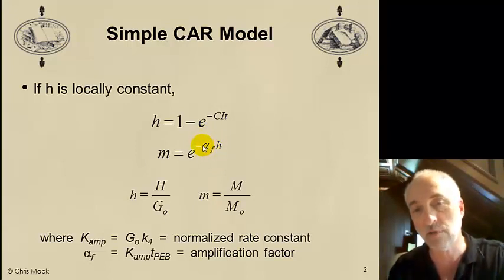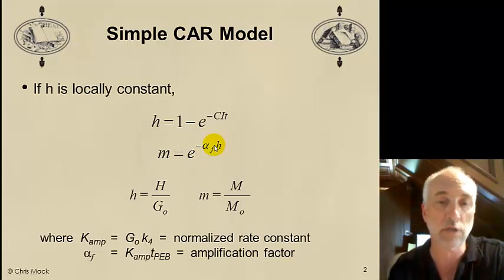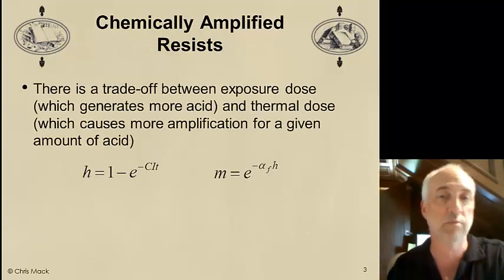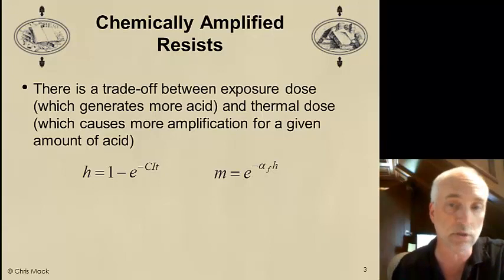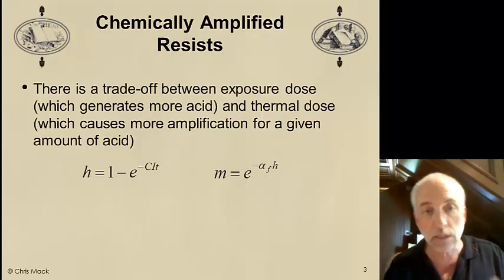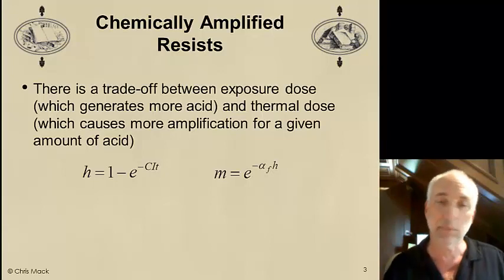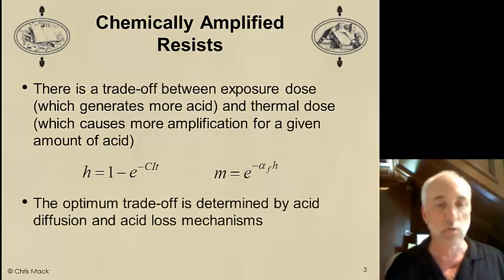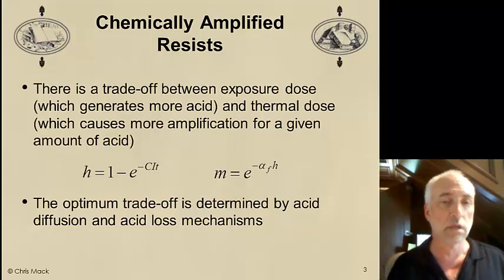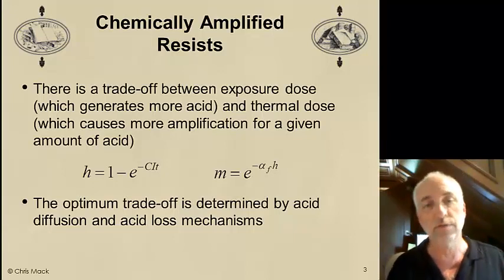This equation shows us the trade-off. More exposure dose gives us a larger value of h, so we need less thermal dose to get the same effect. If I use a lower dose — smaller h — I can give it more thermal dose to make up for the lower exposure dose. The result is a trade-off between exposure dose, which generates more acid, and thermal dose, which causes more amplification. Unfortunately, the assumption of locally constant acid concentration is not correct, for two reasons: acid diffusion and acid loss.